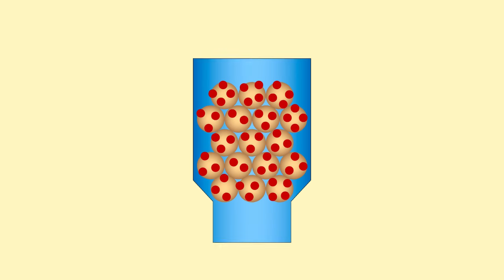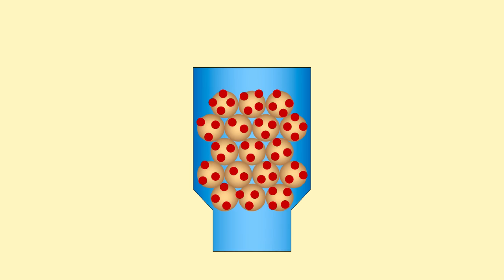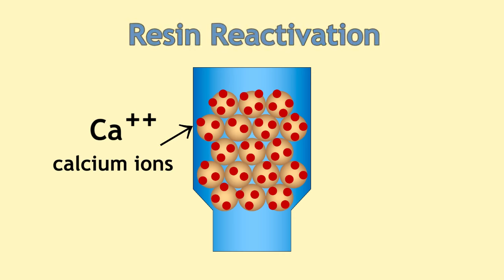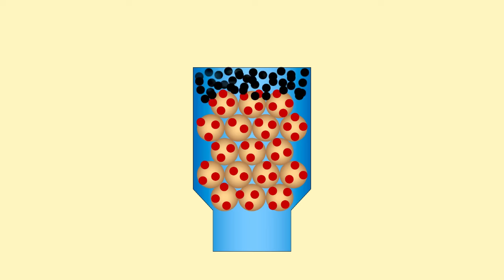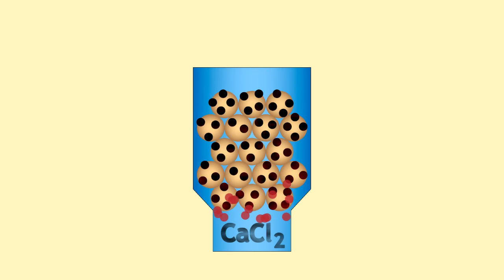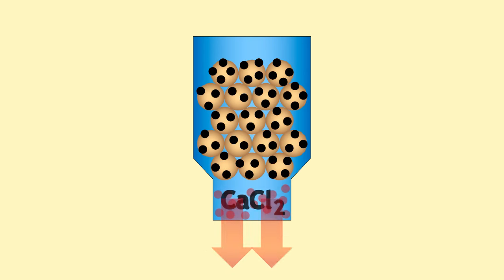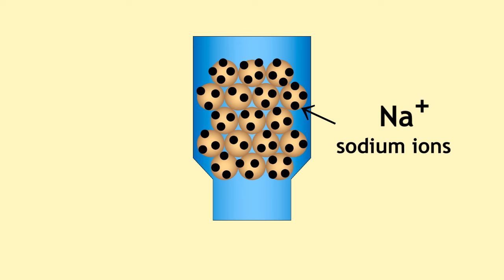Obviously, after a time, the resin gets full of calcium ions and you have to reactivate it. And to do this, you pour concentrated salt solution, sodium chloride solution, very high concentration, so that it's high enough to reverse the reaction. And the calcium chloride comes out in solution, and the column is again full of sodium ions and ready for use.